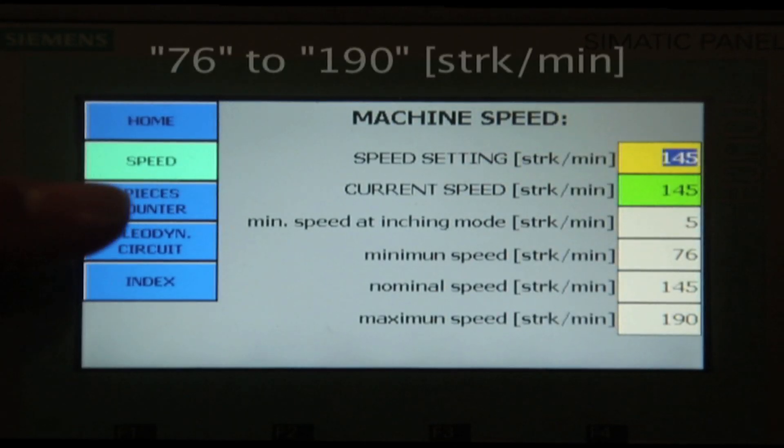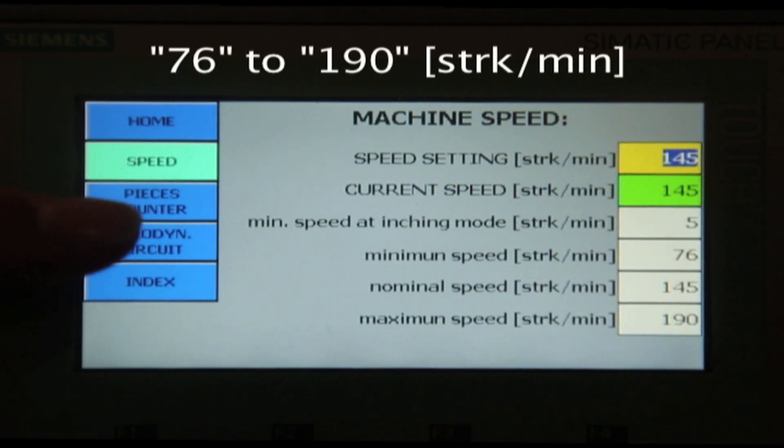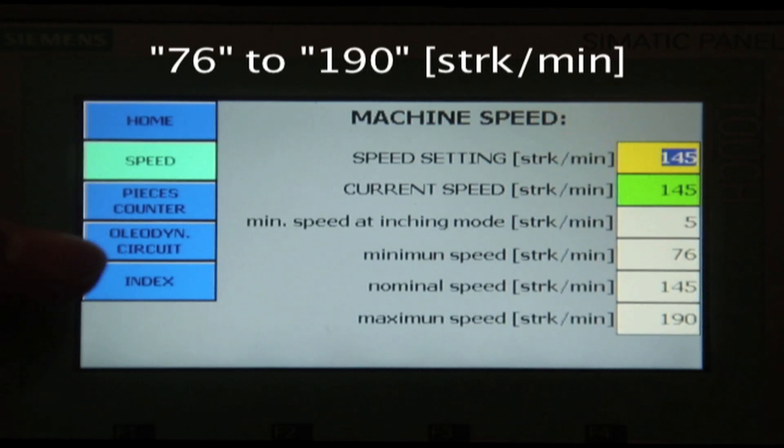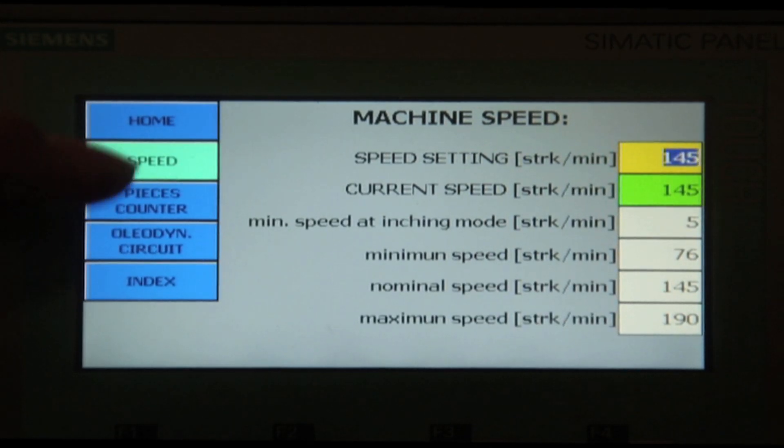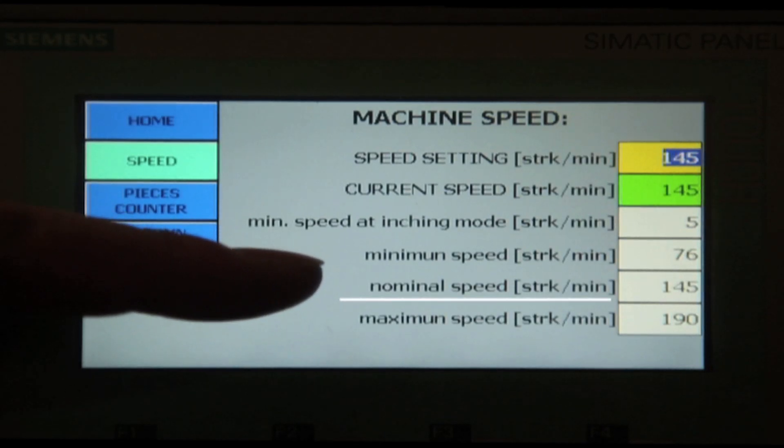This particular press will run from 76 strokes per minute to 190 strokes per minute with our variable speed option. The nominal strokes per minute is 145.